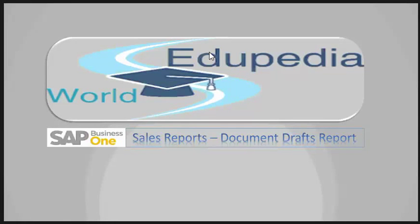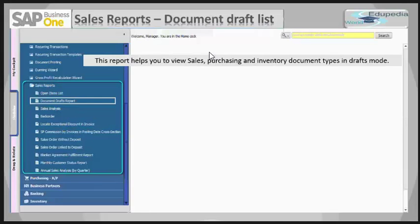Welcome to Edupedia World. In this session we will see about the Documents Draft List report. This report is found in Sales Reports and helps you to view sales, purchasing, and inventory document types that are in draft mode. Because we are dealing with sales, we will be focusing only on sales documents in SAP Business One.